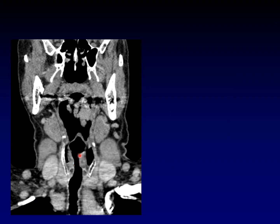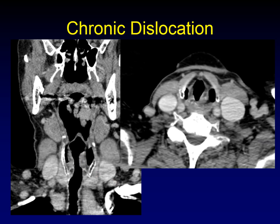Here I want to draw attention to the aryepiglottic fold — the left aryepiglottic fold is so much thicker than its counterpart on the right. Is this a mass thickening out the aryepiglottic fold? No — this is chronic dislocation, just redundancy of the aryepiglottic fold because the arytenoid cartilage has been displaced anteriorly and superiorly away from the cricoid cartilage. The contralateral arytenoid sits in the appropriate position along the superolateral aspect of the cricoid, while the displaced arytenoid is too anterior — and it is the arytenoid itself making this fold look so thick.